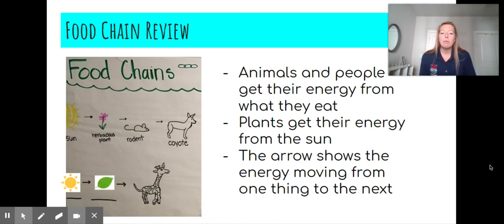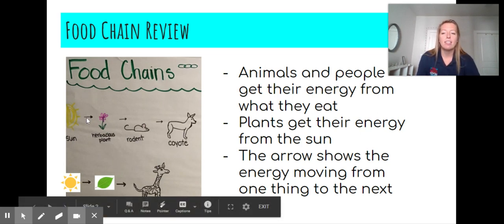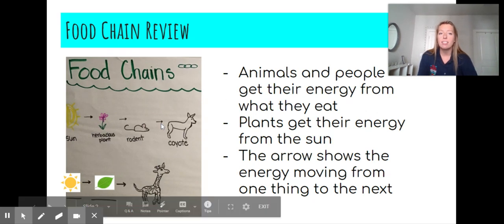You should remember that animals and people get their energy from what they eat, from our food. But plants, they get their energy from the sun. So remember, in our food chain, the arrows are showing the energy moving from one thing to the next.